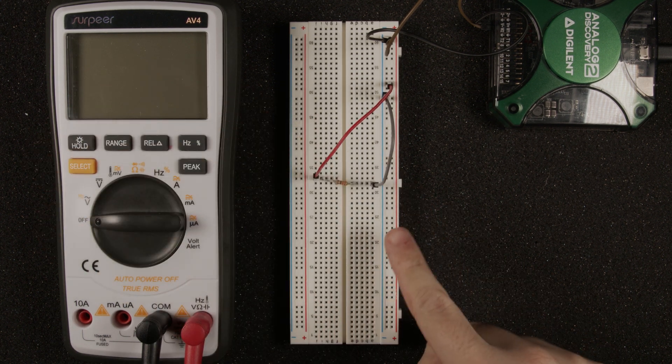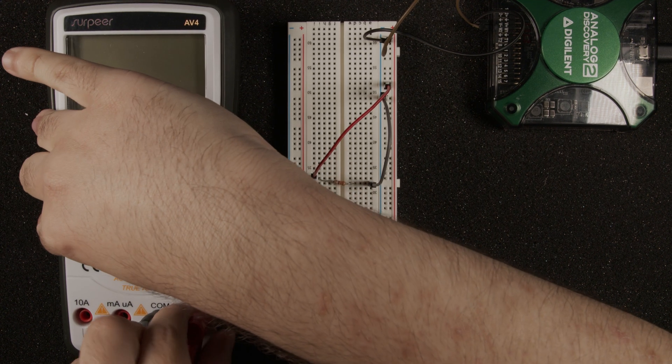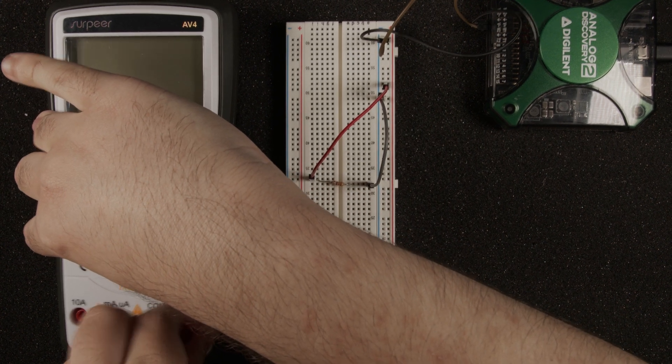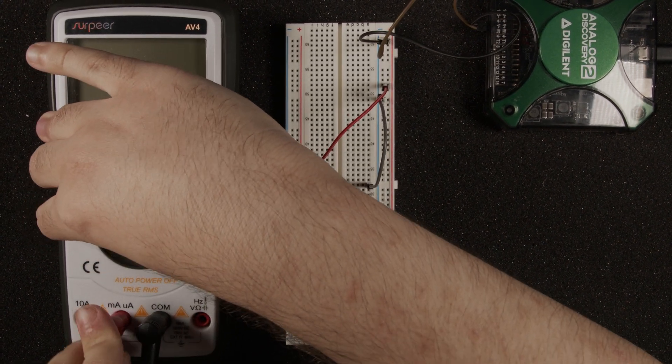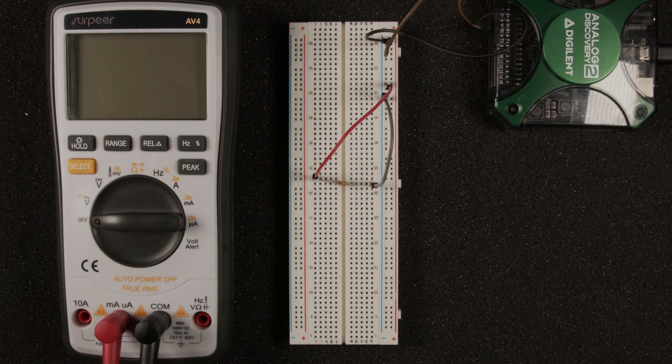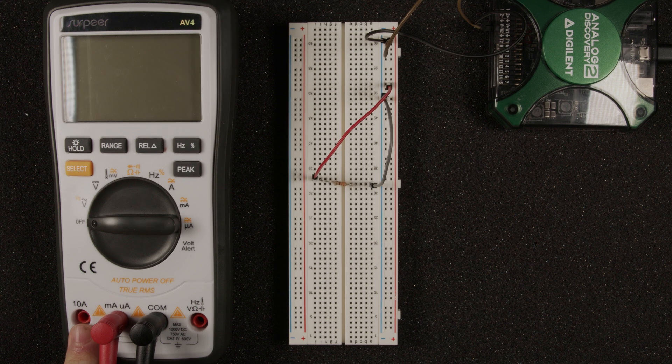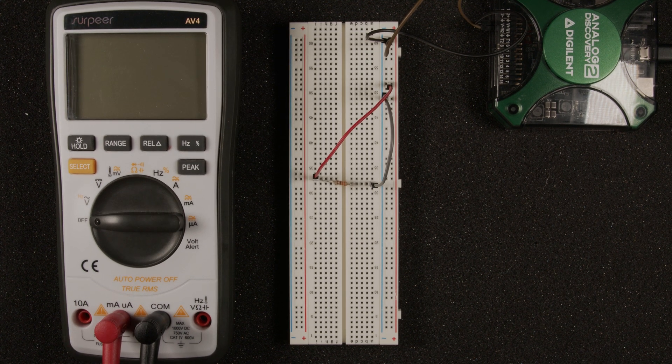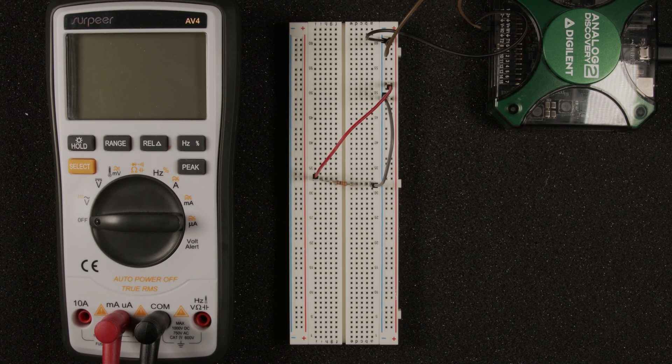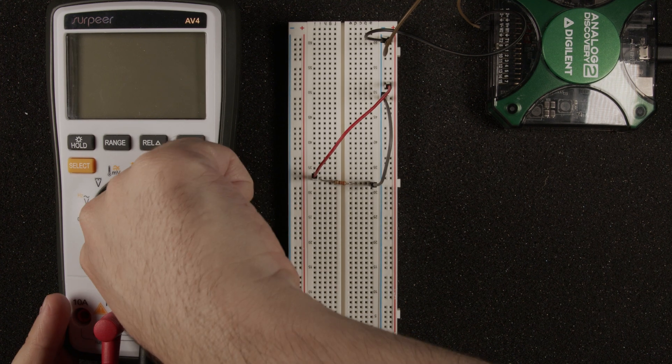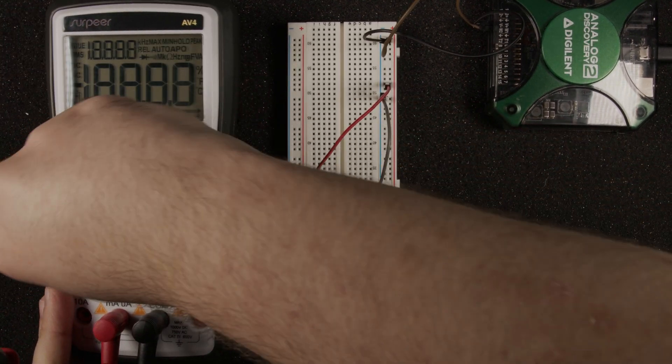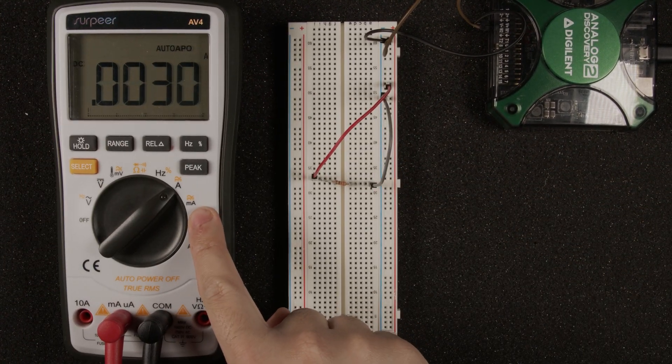So for me, I know that this is going to be in the milliamp range, so I am going to unplug it from voltage and plug it into milliamps. If you are not sure what range you're going to be in, it is always best practice to start with the highest fused one and then work your way down. Since I am measuring milliamps, I am going to turn my dial to select the milliamp range here.